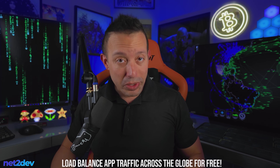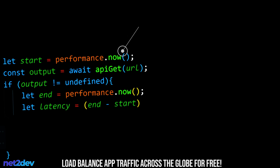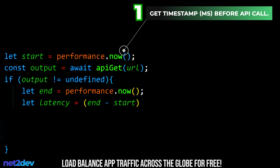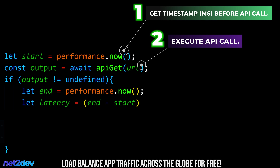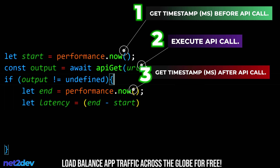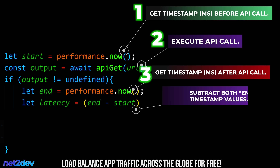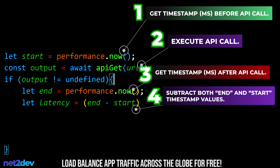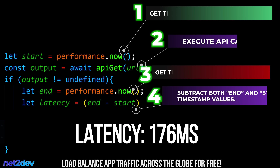To summarize: number one, get the timestamp before the API call; number two, execute the API call; number three, get the timestamp after; number four, subtract end minus start. Four simple steps to obtain the latency.